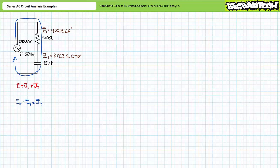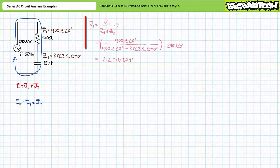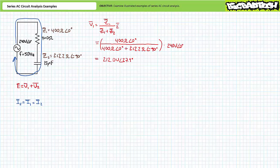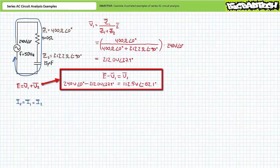There are several ways to obtain our desired figures. Perhaps the easiest and most direct means of doing so is through the use of the AC voltage divider rule. The AC voltage divider rule set up to solve for V1 suggests that V1 equals 212 volts at an angle of 27.9 degrees. Let's make use of Kirchhoff's voltage law to solve for V2. A rearrangement solving for V2 suggests that V2 equals E minus V1, yielding V2 to be 112.5 volts at an angle of negative 62.1 degrees.